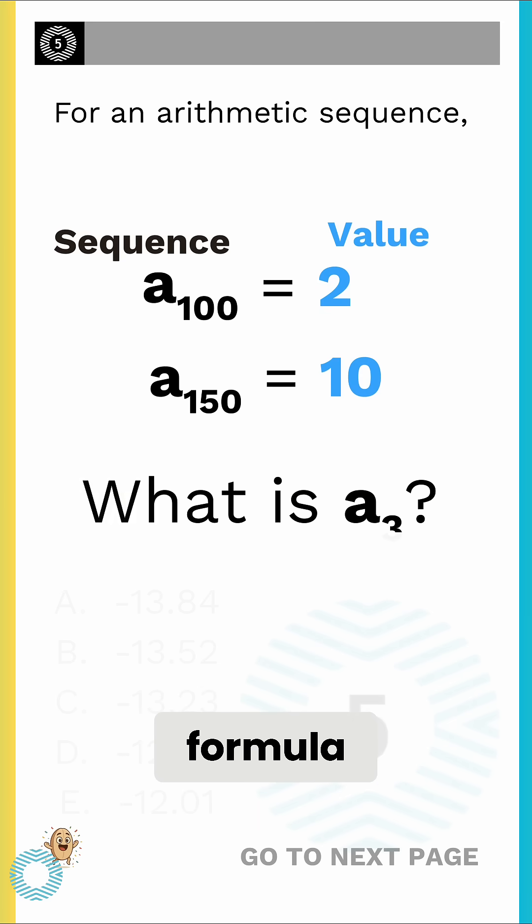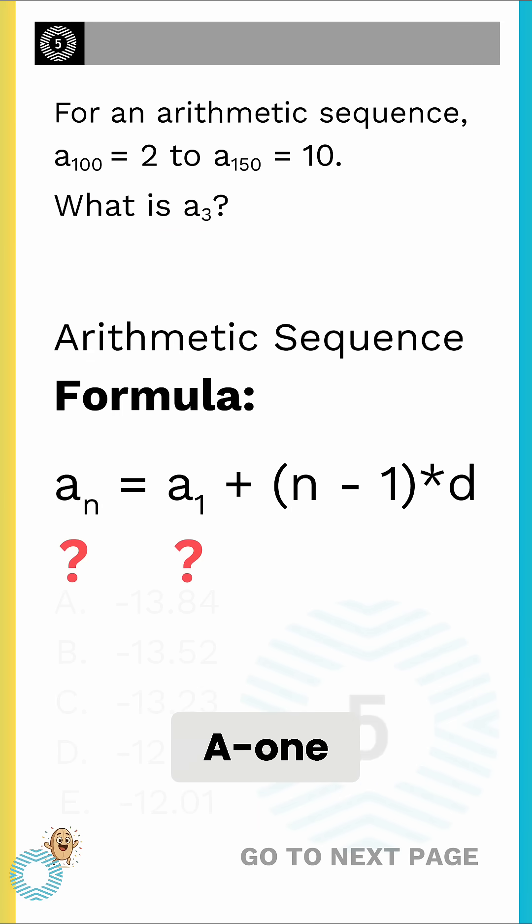Let's use the arithmetic sequence formula. We don't initially know the first term a1 or the common difference d. However, we have two known terms, which helps us find d.